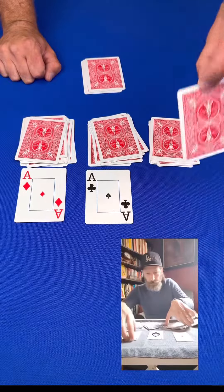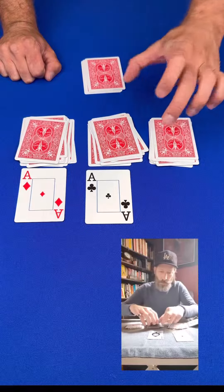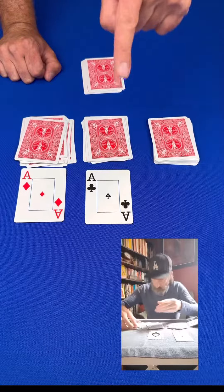Place the first ace on top of the pile of 14 cards. Then take any amount of cards from the middle pile and put it on top of them.